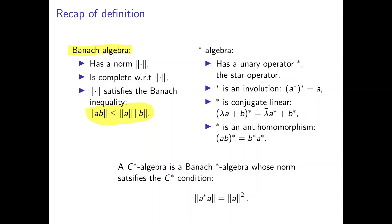Then we have star algebras, which are algebras with a unary operator called the star operator. The star operator should be an involution, meaning it is its own inverse, and it should be conjugate linear where lambda is a complex number. Finally, it should be an anti-homomorphism, meaning it reverses the order of multiplication: the star of a times b equals the star of b times the star of a.